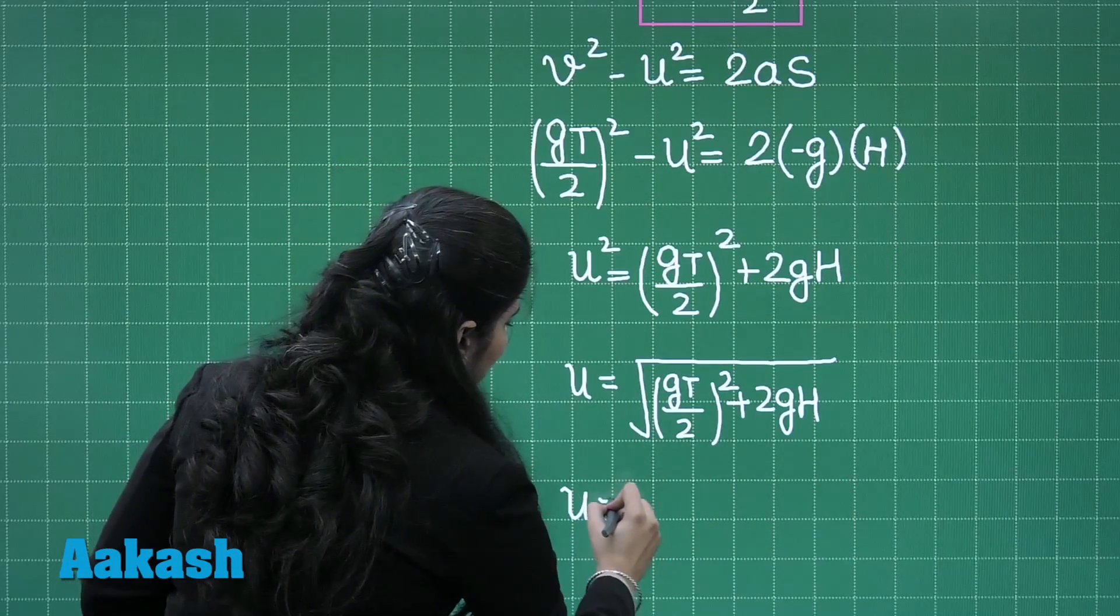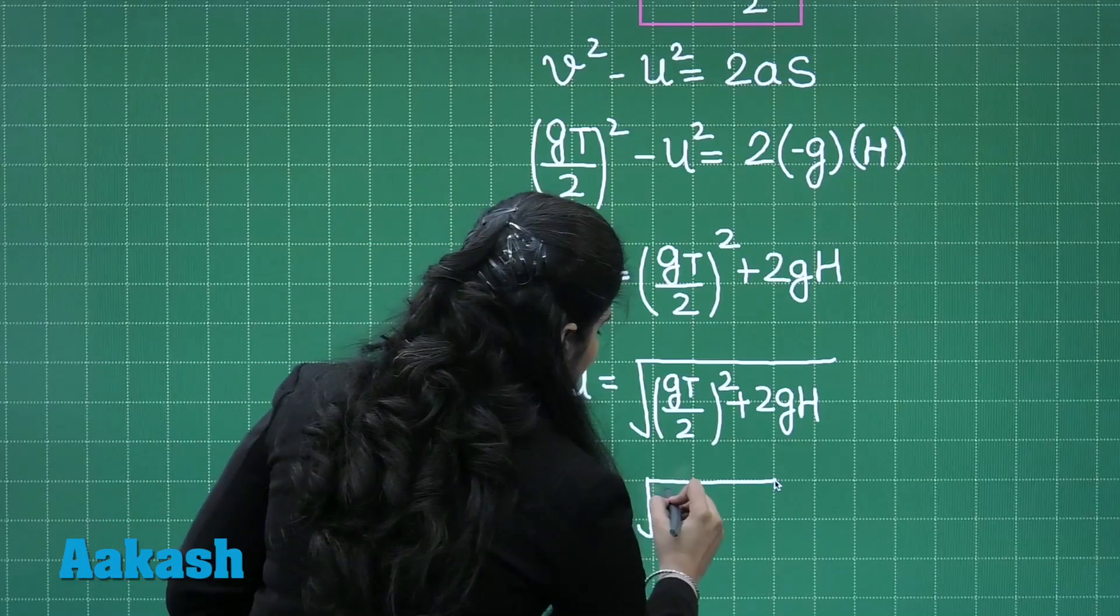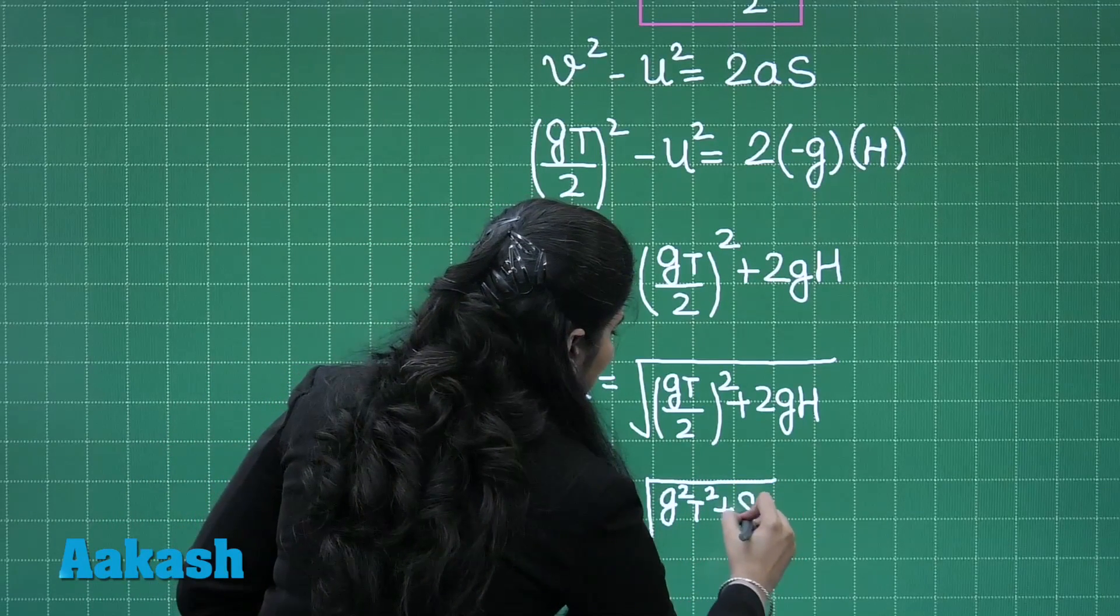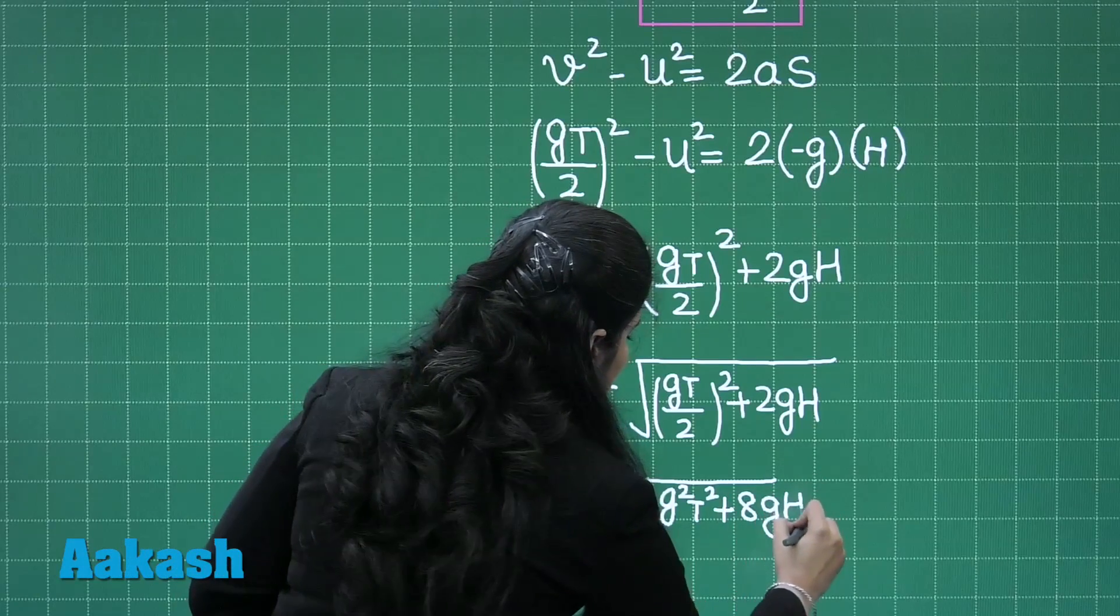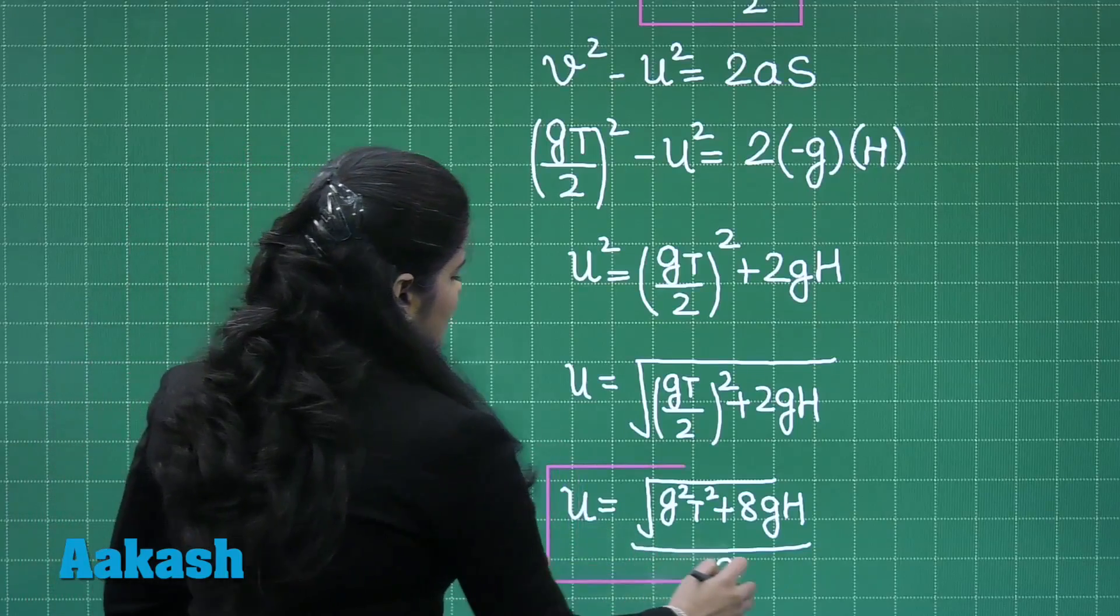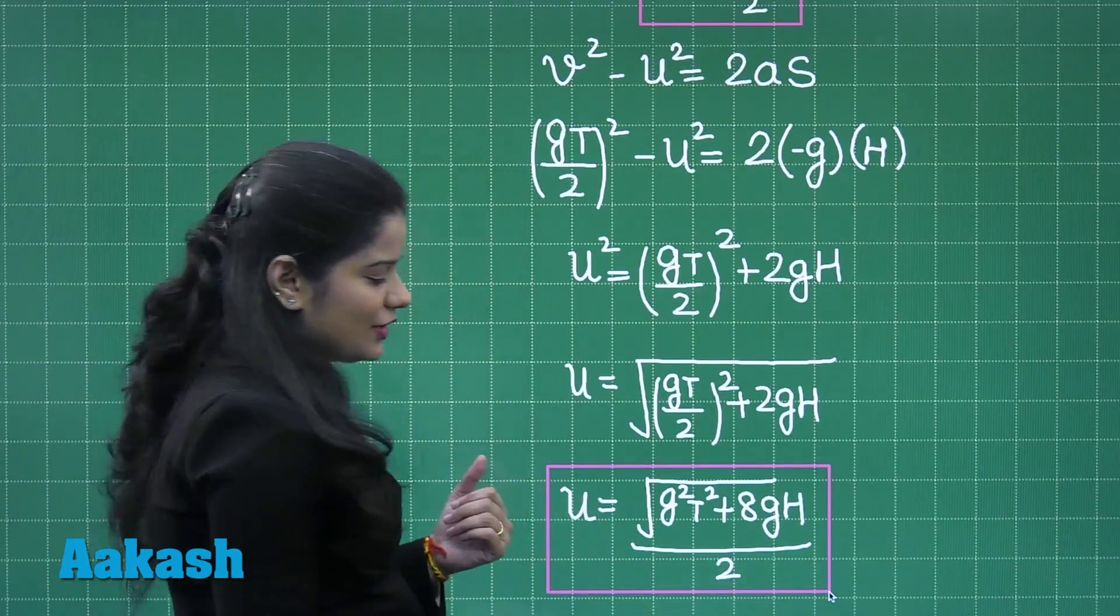On solving it further I will get this will be G square T square plus 8GH divided by 2. So this is the velocity with which this ball was thrown in the upward direction.